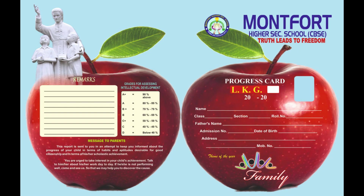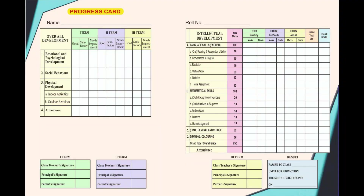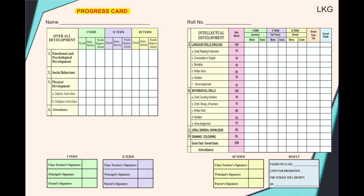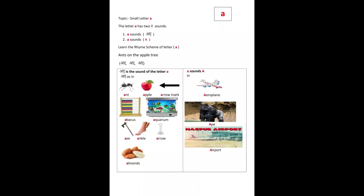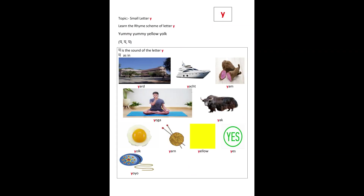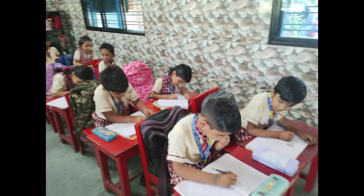Term 1: quarterly examination. Term 2: half yearly examination. Term 3: annual examination. The child's intellectual development is taken under language skills.